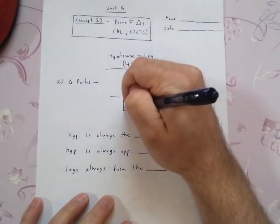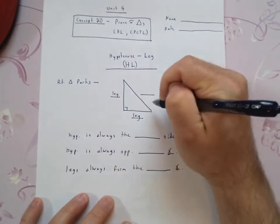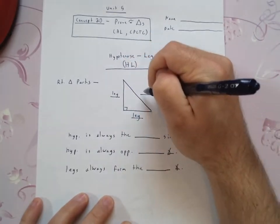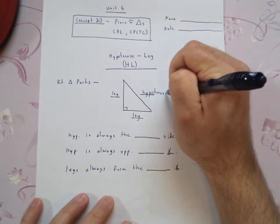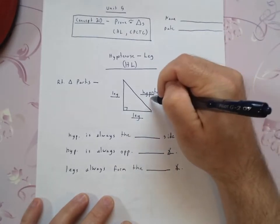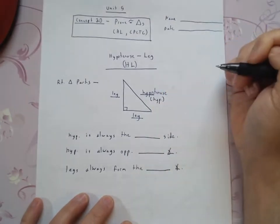These guys right here, these are what we call the legs. This long side right here is what we call the hypotenuse, or I usually just abbreviate it HYP.